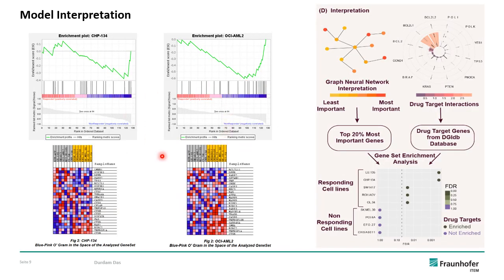We also tried to find key important genes based on gene expression data. We tested the top 20% genes ranked by GNN Explainer and did a classical gene set enrichment analysis. We identified that the model is actually able to make predictions based on the hallmark genes of the cancer cell lines, meaning the model is able to differentiate well between responders and non-responders using the correct set of genes.